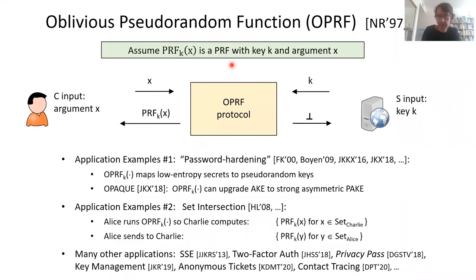What is an Oblivious PRF? The classic definition is that it is a secure computation of the following. This is a PRF, and the two parties — client and server — where the client has an argument X and the server has a key K. The client computes PRF_K at point X, the server gets nothing and in particular does not learn what argument the PRF was computed on. This has found multiple applications — it's a beautiful crypto gadget.